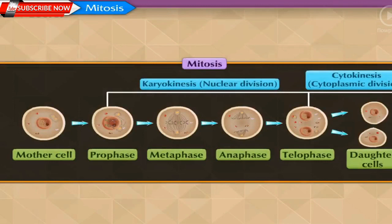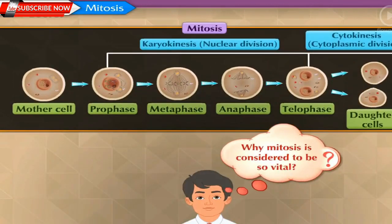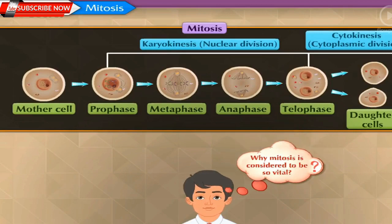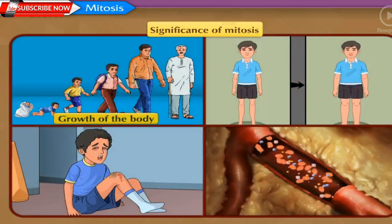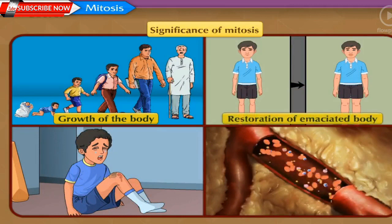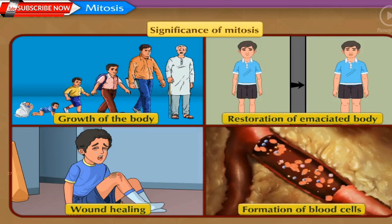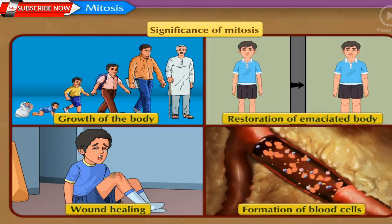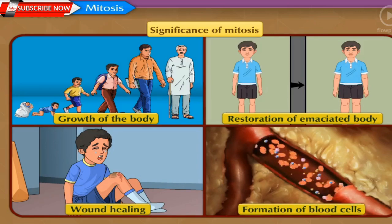Mitosis is essential for the growth of the body. It is also necessary for restoration of the emaciated body, wound healing, formation of blood cells, etc. Let us now proceed to learn about another type of cell division — meiosis.